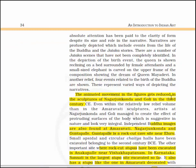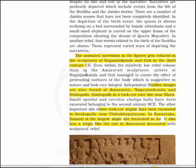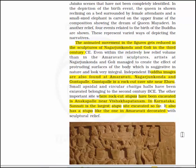The animated movements in figures get reduced in the sculptures of Nagarjunakonda and Goli in the 3rd century CE. Even within relatively low relief, artists at Nagarjunakonda and Goli managed to create the effect of protruding surfaces of the body, which is suggestive in nature and looks very integral. Independent Buddha images are also found at Amaravati, Nagarjunakonda and Guntapalle. Guntapalle is a rock-cut cave site near Elluru. Small apsidal and circular chaitya halls have been excavated belonging to the 2nd century BCE.